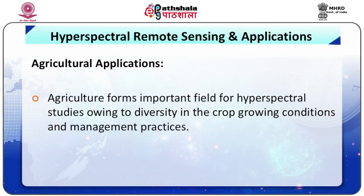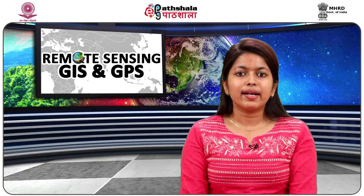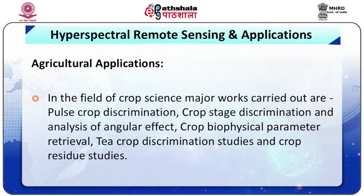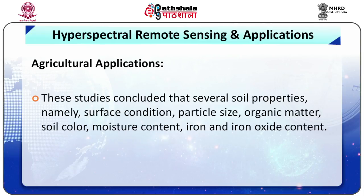We will now discuss some applications in hyperspectral remote sensing. The first is agriculture. Agriculture forms an important field for hyperspectral studies owing to the diversity in crop growing conditions and management practices. These complexities are compounded by a variety of factors such as soil, water management, and crop varieties. In the field of crop science, major works carried out include pulse crop discrimination, crop stage discrimination and analysis of angular effects, crop biophysical parameter retrieval, tea crop discrimination studies, and crop residue studies. These studies identified important narrow bands required for pulse crop discrimination and important view angles and hyperspectral indices for crop stage discrimination.